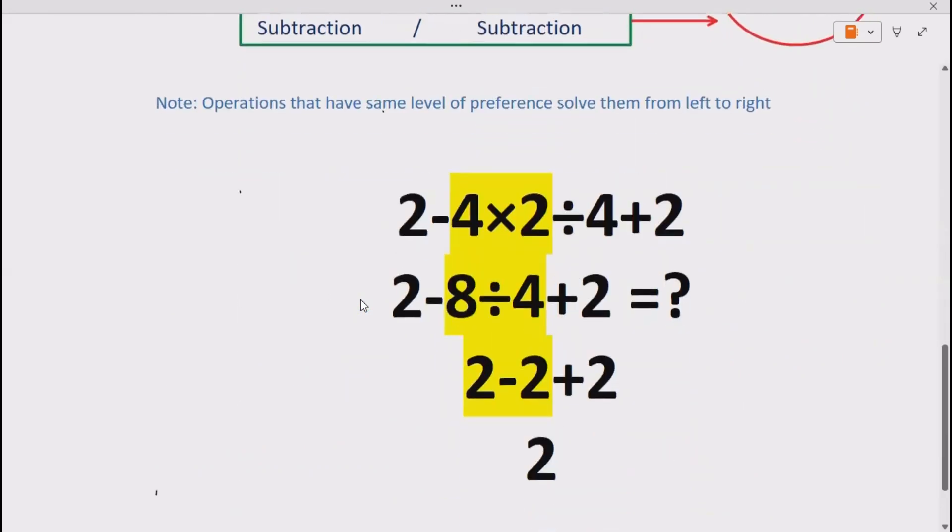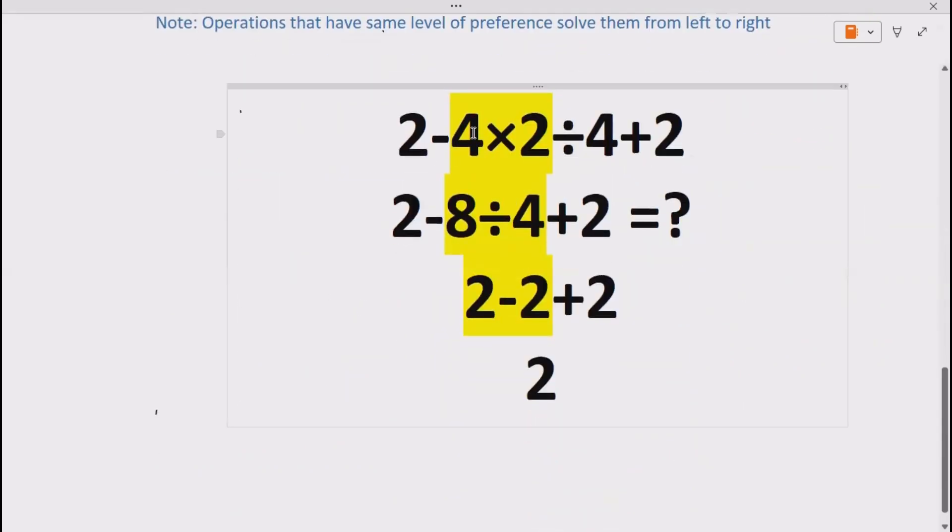Now let's see how we can solve our expression. So we are given 2-4×2÷4+2. According to BODMAS, PEDMAS, we have division and multiplication, but going from left to right since they have same level of reference, we have 4×2 to solve first.